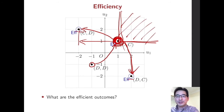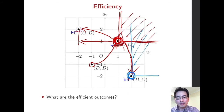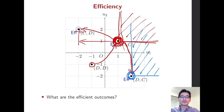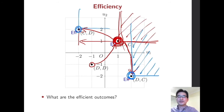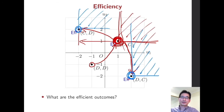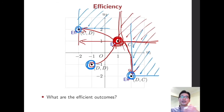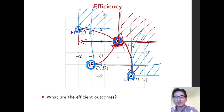Similarly, we can check that the other outcomes are efficient because there is no feasible outcome in their respective north-east areas. But as mentioned, the DD outcome is not efficient because we can find an alternative outcome in its north-east area.